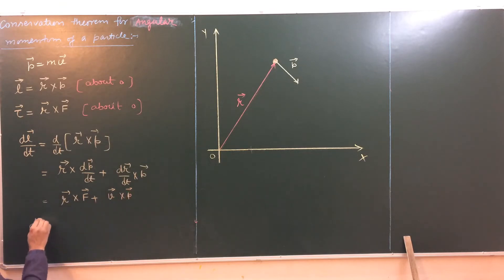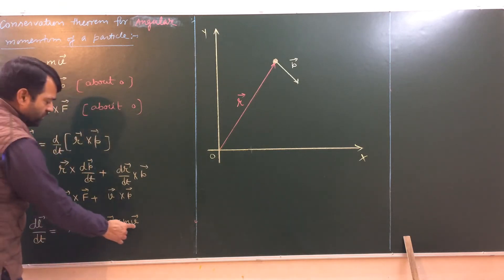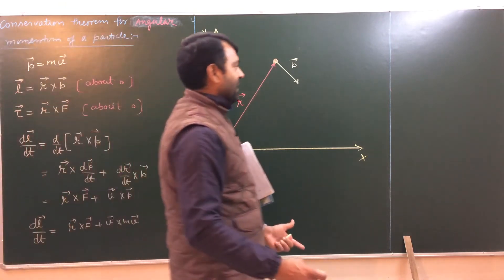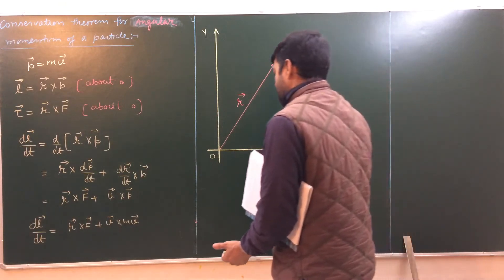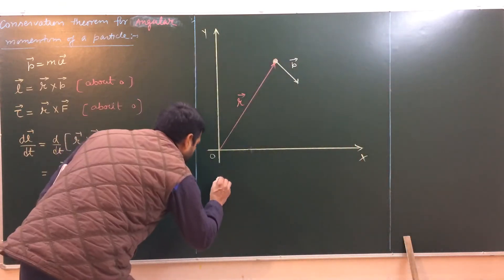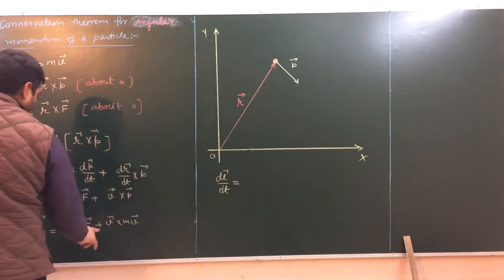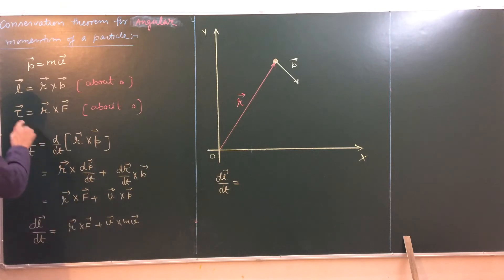My left hand side is dL by dt. r cross f plus v cross mv. The first line which I have written. v cross v. They are in the same direction, so I will get 0, because the cross product of two parallel vectors or two identical vectors is 0. Then I will get dL by dt is r cross f plus 0. r cross f is my torque.